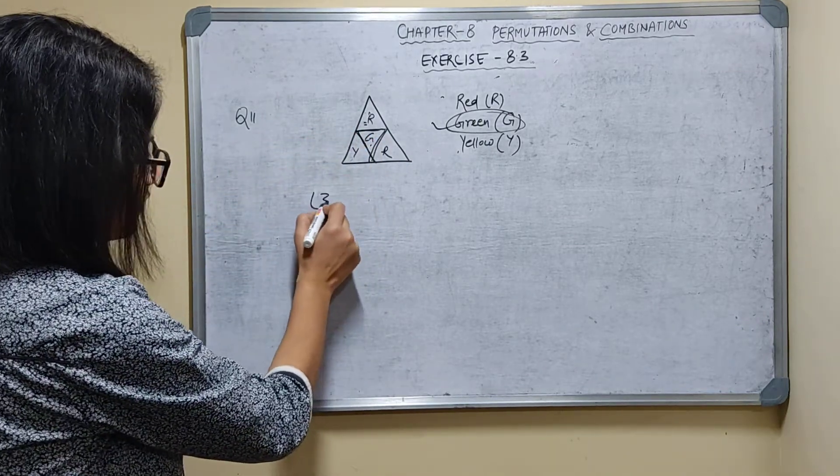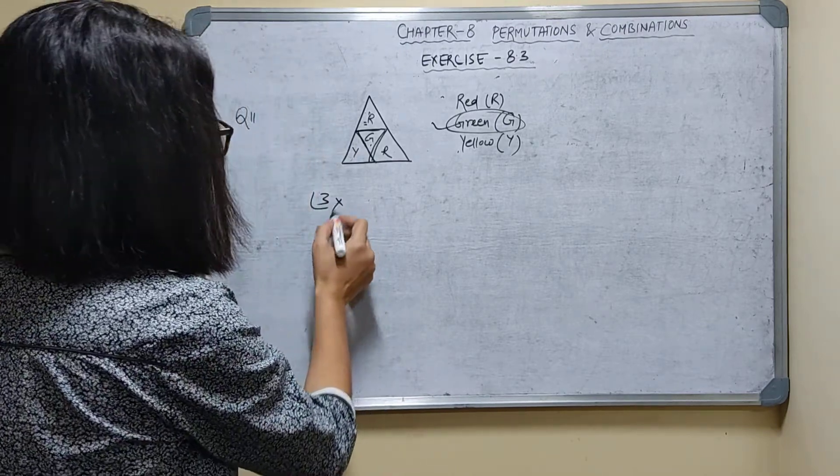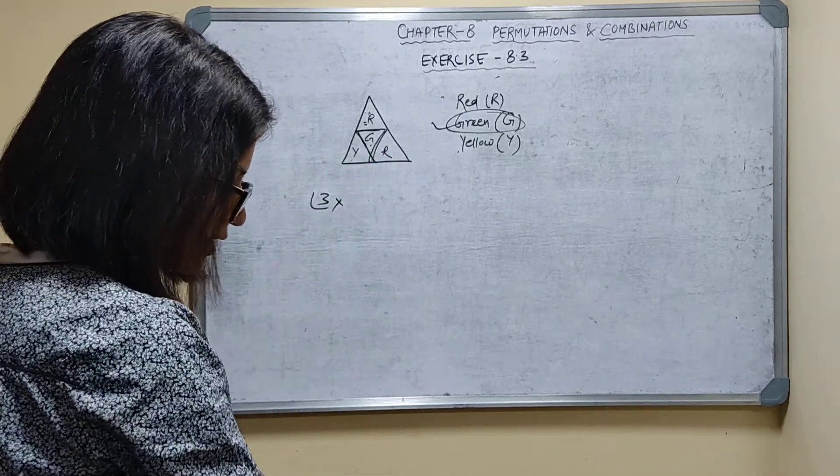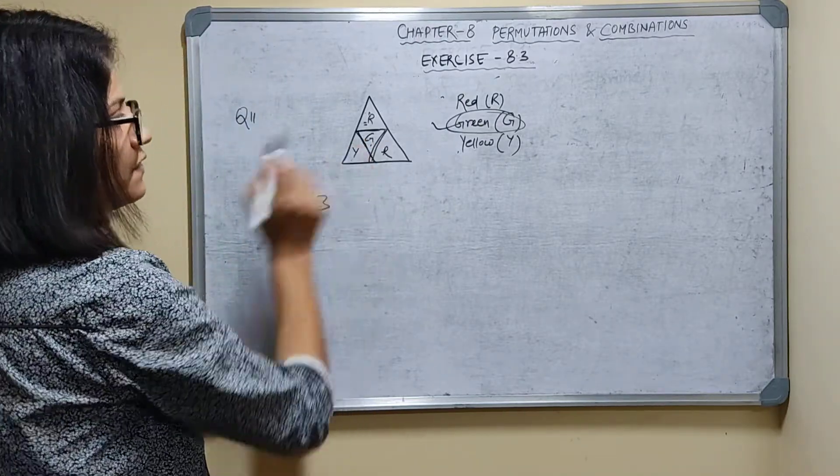For central triangle, how many ways are there? 3. This triangle, how many are there? Sorry. For central triangle, how many ways are there? 3 ways, 3 ways.